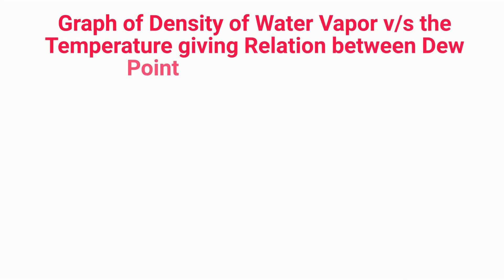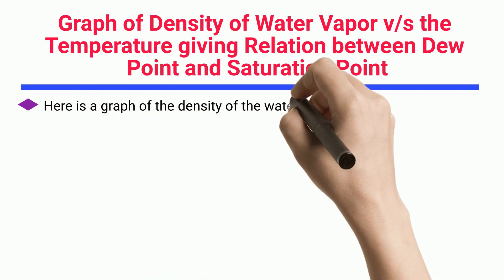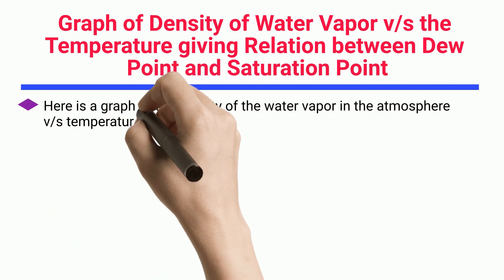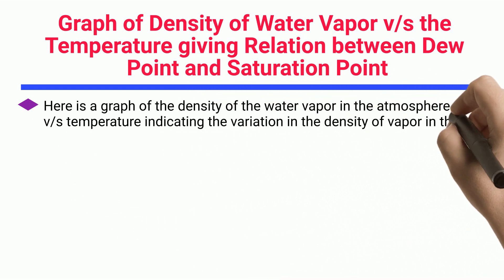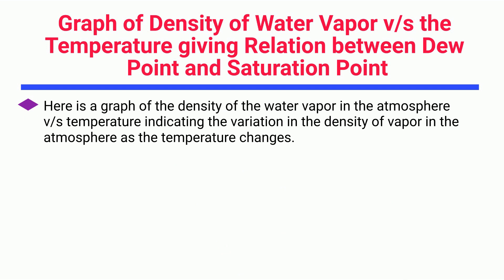A graph of the density of water vapor versus temperature illustrates the relationship between the dew point and saturation point. The graph clearly shows that as the density of water vapors reaches the saturation point, it does not change further, while the temperature of the system falls down at constant vapor pressure until the dew point is attained. The temperature Ta denotes the atmospheric temperature, and at the saturation point the temperature of the air equals Ta.